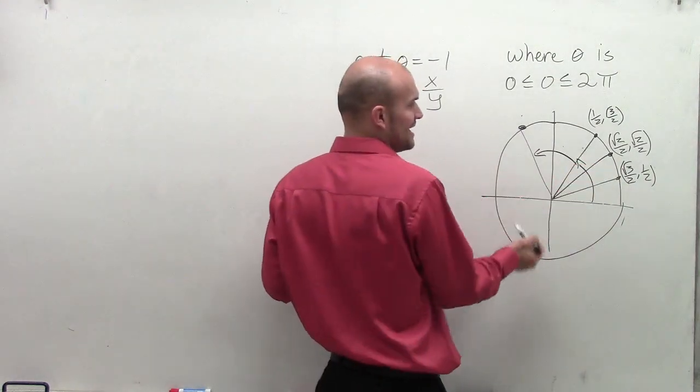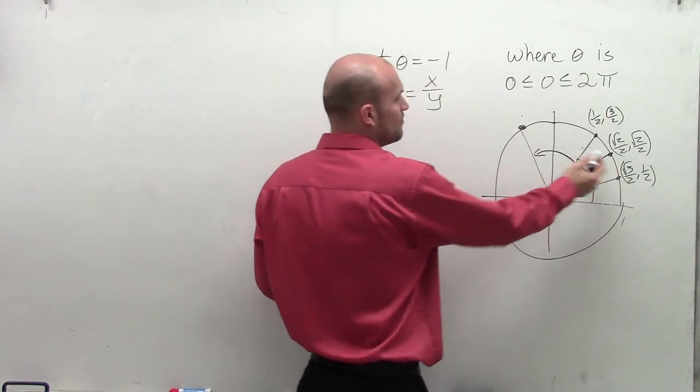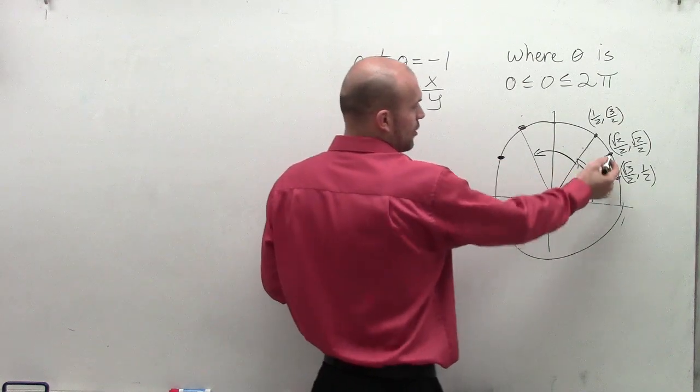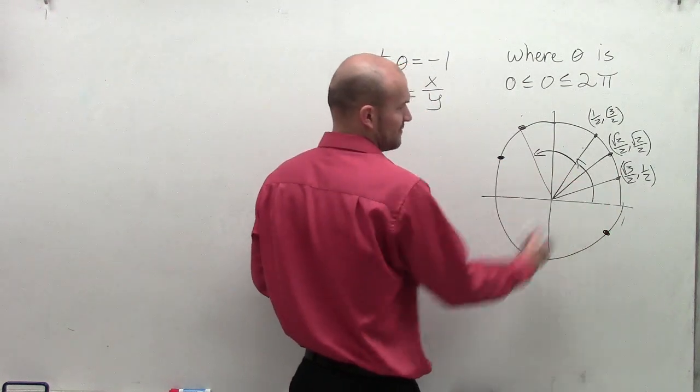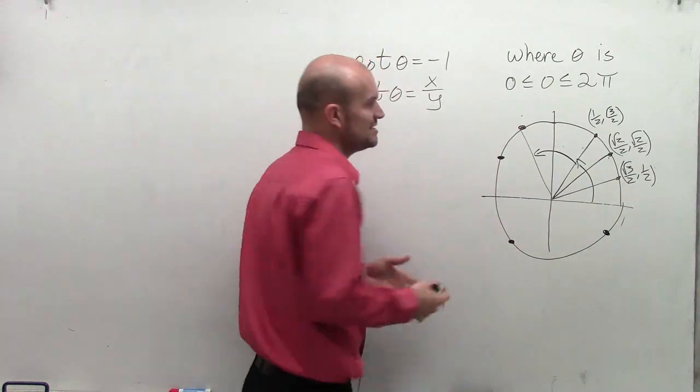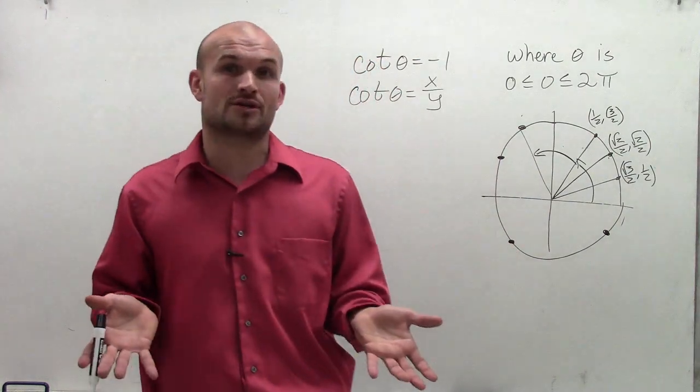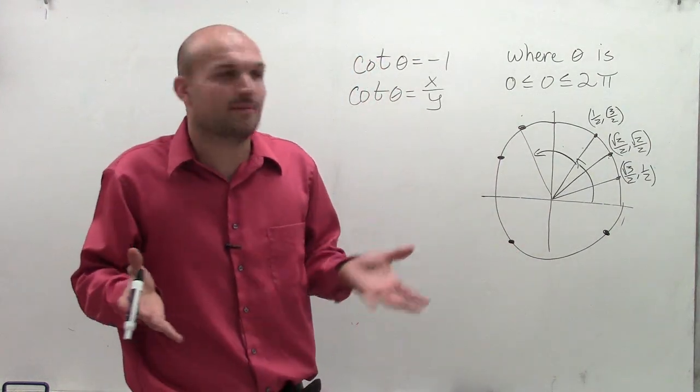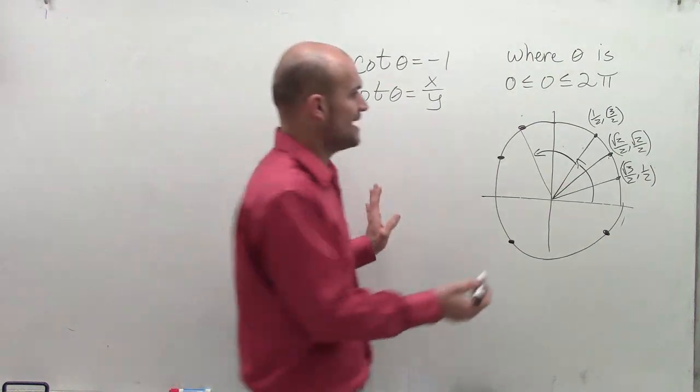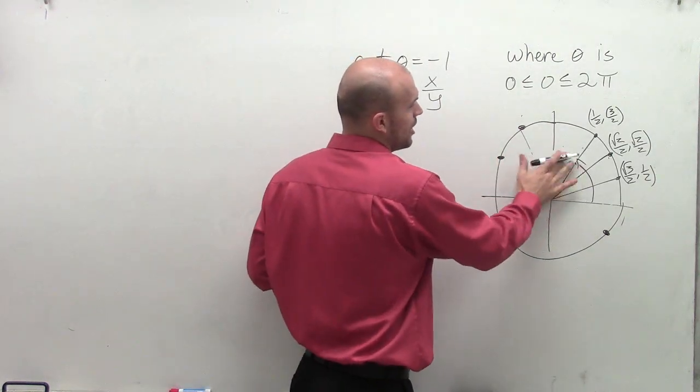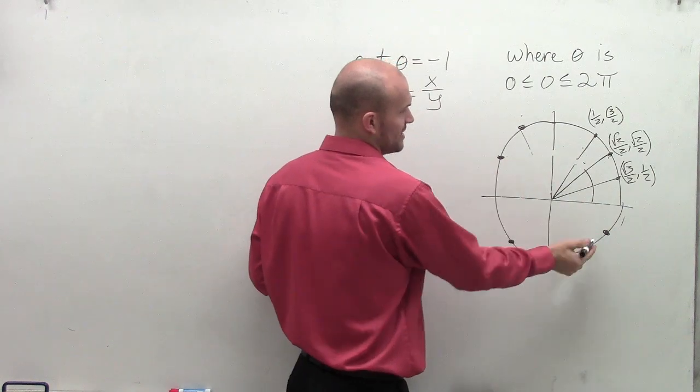But if I need these to be negative, that means I either need to have my x coordinate be negative or my y coordinate be negative. If I look in the third quadrant, that means both the x and the y coordinates are going to be negative. So therefore, I would still have a positive 1. So I just need to be able to figure out, what are these two angles right here?